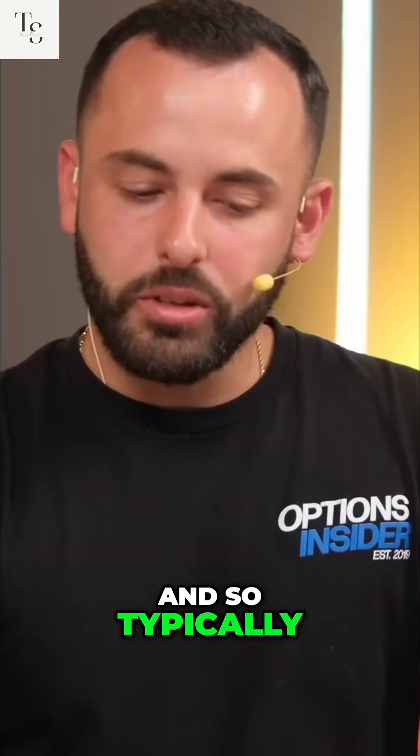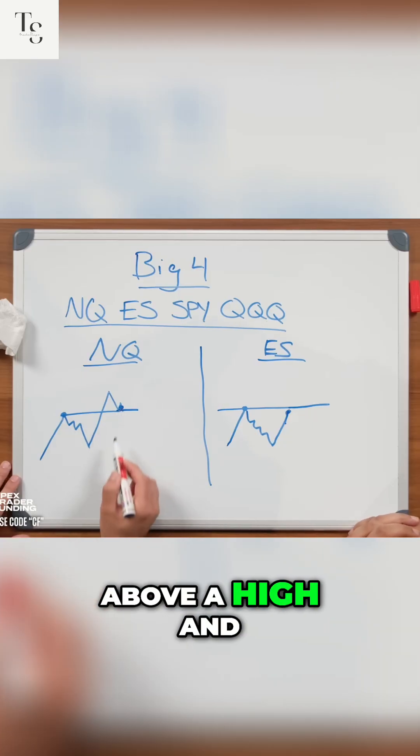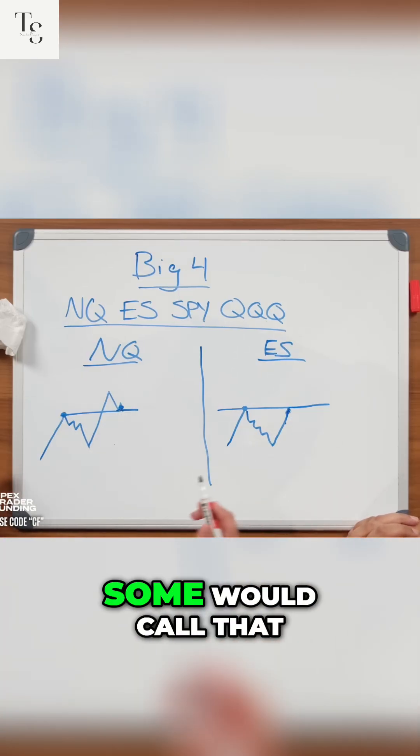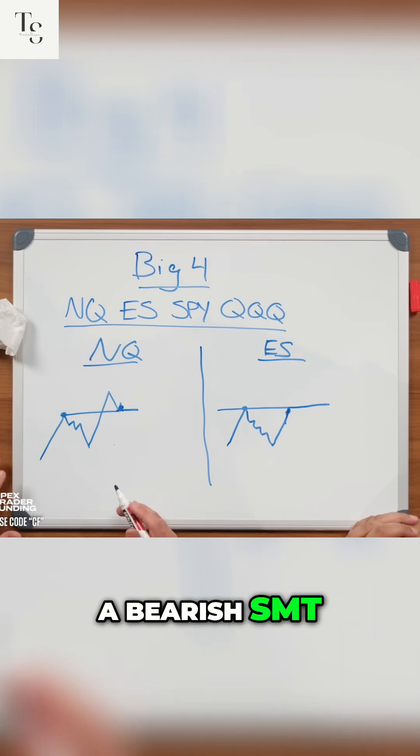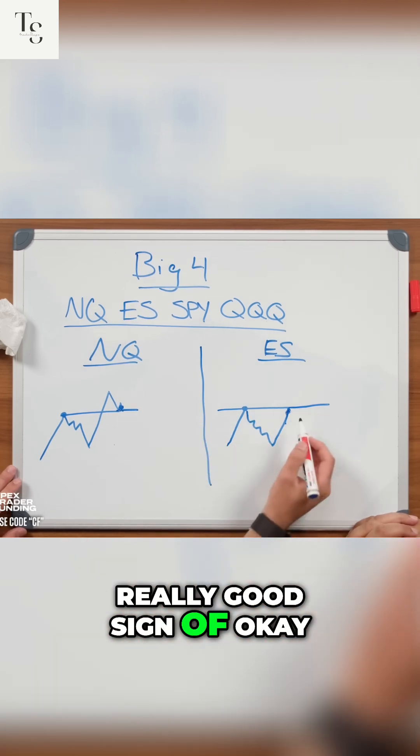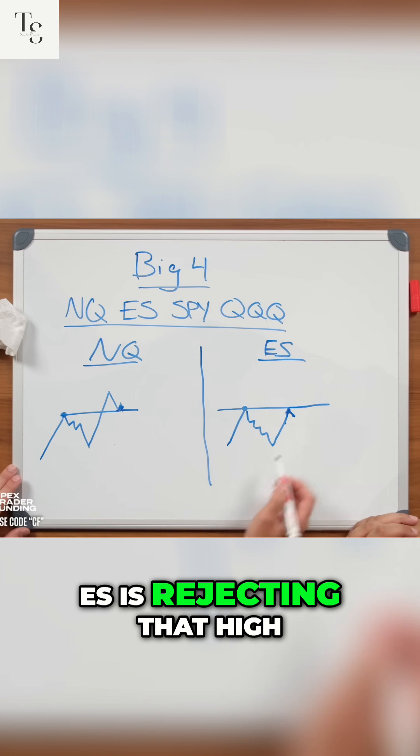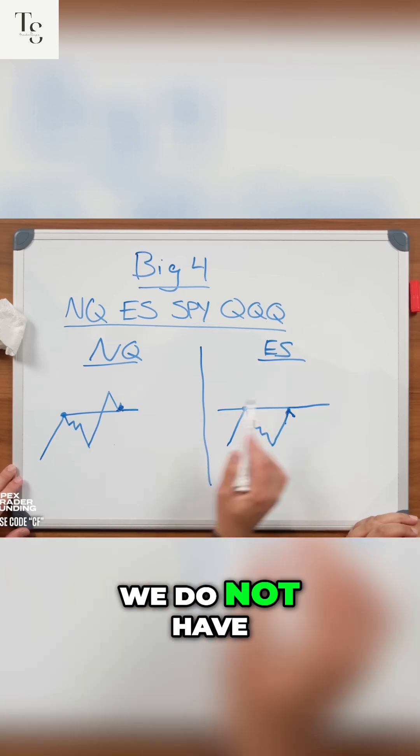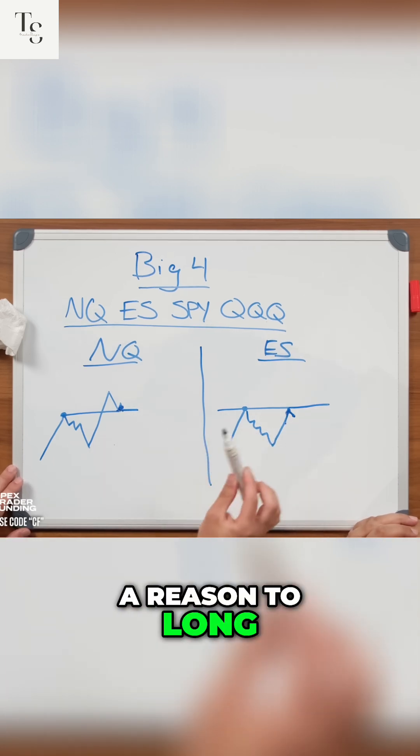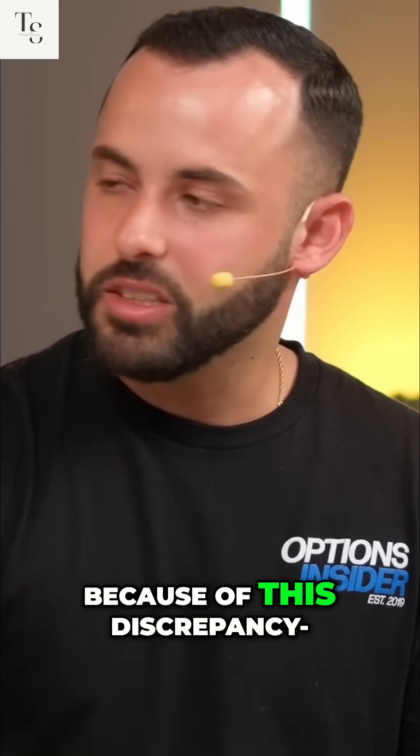Typically when you see a situation where the NASDAQ's above a high and the S&P is below it, some would call that a bearish SMT. This is a good sign - ES is rejecting that high, NASDAQ's above it. But we don't have a reason to long the market yet because of this discrepancy.